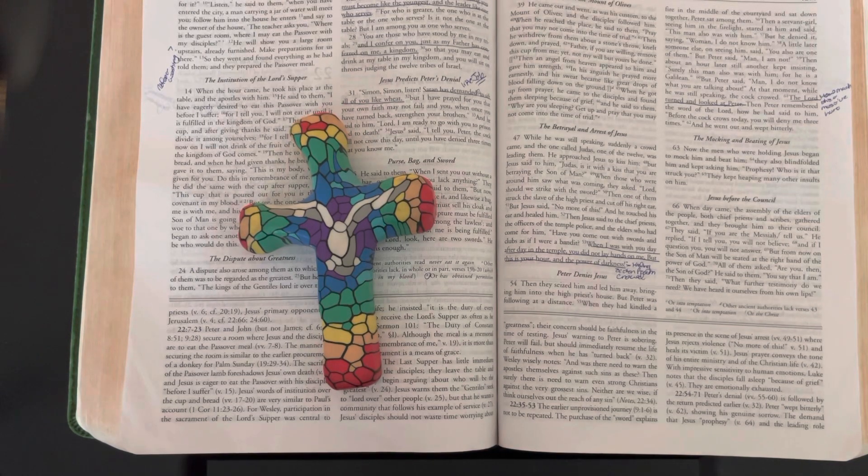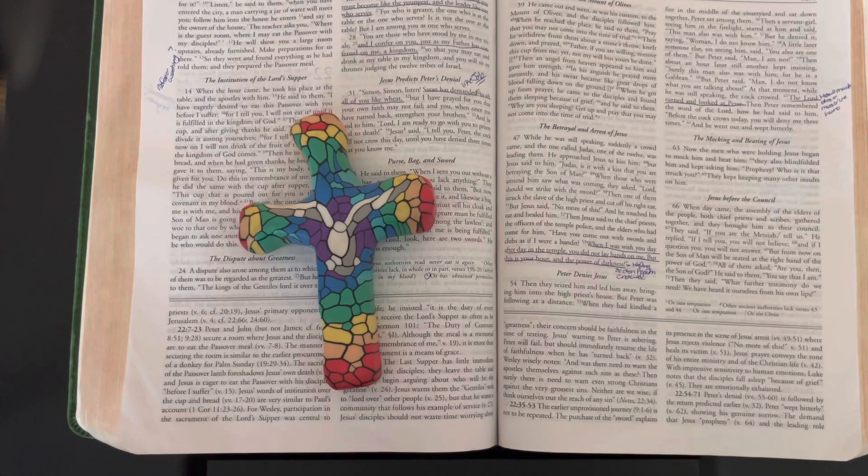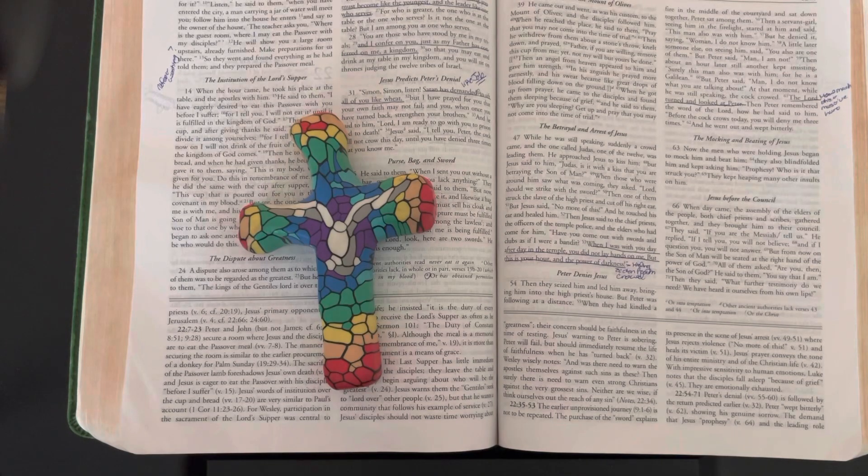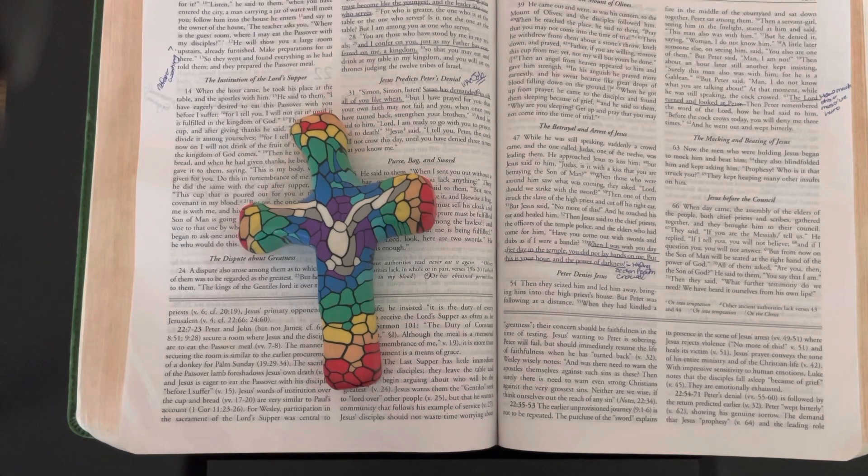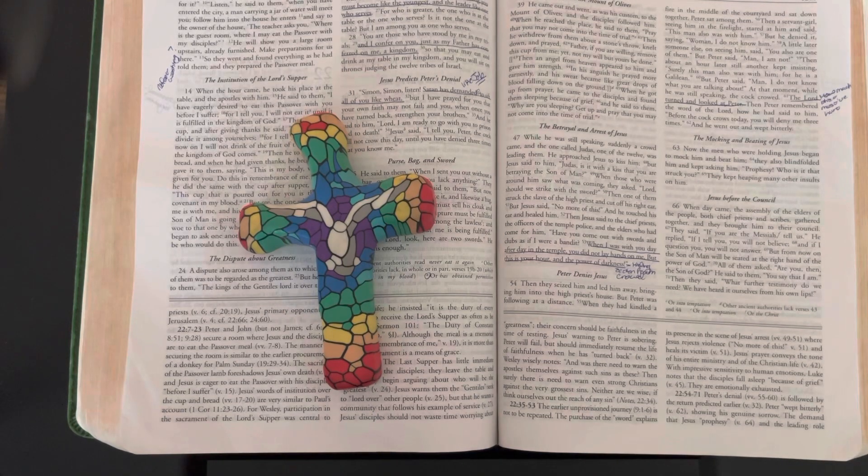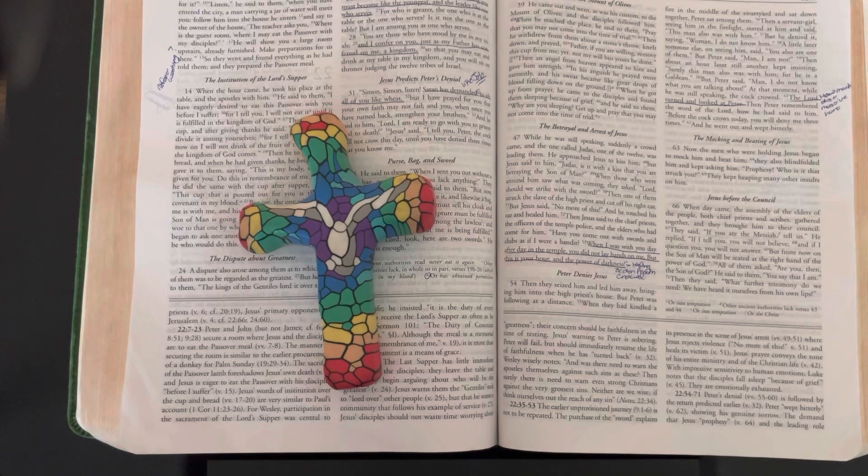Then Jesus said to the chief priests, the officers of the temple police, and the elders who had come for him, "Have you come out with swords and clubs as if I were a bandit? When I was with you day after day in the temple, you did not lay hands on me. But this is your hour and the power of darkness." Then they seized him and led him away, bringing him into the high priest's house. But Peter was following at a distance.